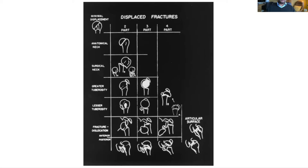Neer essentially broke down the proximal humerus into four parts: the humeral head, the greater tuberosity, lesser tuberosity, and the shaft components. If you had fracture lines between them and there was no displacement, then it would essentially be a one-part fracture or a minimally displaced fracture. Displacement according to Neer was at least one centimeter separation between the parts and/or angulation of around 45 degrees. Two-part fractures can either be anatomical or surgical neck, greater or lesser tuberosity, and then there are the three and four-part fractures.